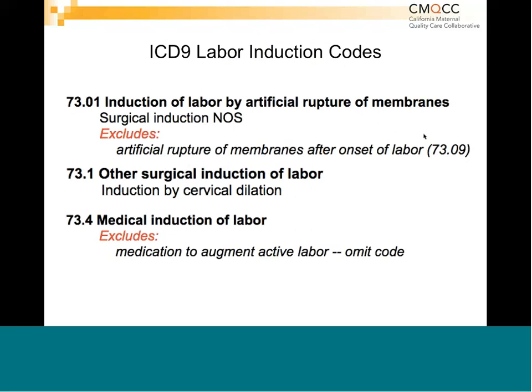In the handout on the website, there's a nice table that I would recommend putting up in labor and delivery, because this is the ACOG recommended terminology. So these are the ICD-9 codes for labor induction — pretty straightforward, there are three codes: induction by ruptured membranes, induction by other surgical means (which is what they meant by cervical dilators), or medical induction (which is any medication used to induce). If oxytocin is meant to augment labor, you're not supposed to use that code. It should be clear that they had separate codes for artificial ruptured membranes after the onset of labor, which is not something that occurs in ICD-10.